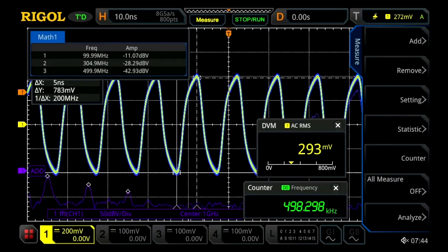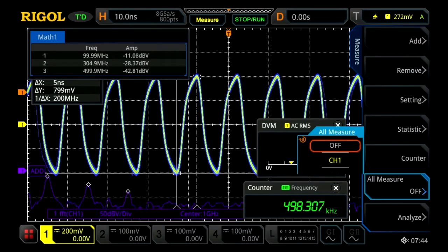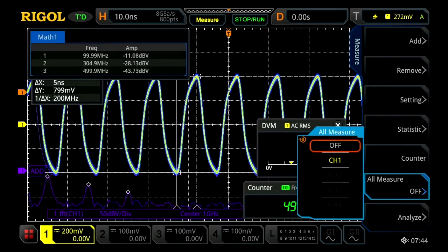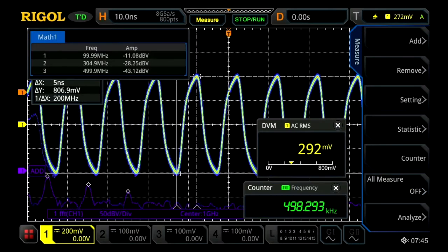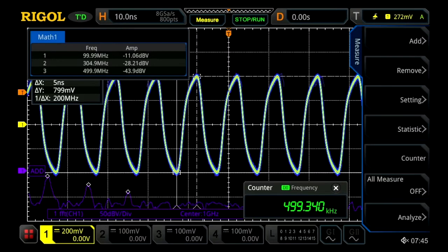We can also go ahead and turn all the measurement functions on if we want. Now this whole time we've managed to stay right at about that 500,000 waveforms per second rate.